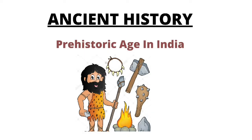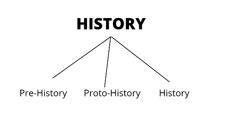Hello friends, today we'll discuss the ancient history part — the prehistoric age in India. India during the old stone age had several migrations and multiple cultures developed. The history can be divided into three parts: prehistory, proto-history, and history. The prehistory part largely belongs to the period before writing was invented, and that was called the old stone age.